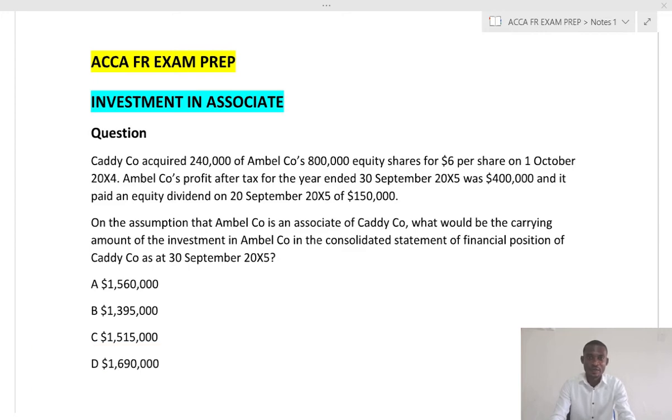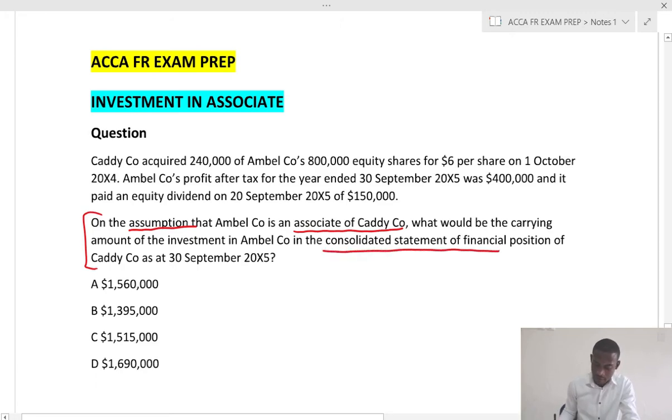Now let's look at the question, starting with the requirement. On the assumption that Amber Co is an associate of Caddy Co, what would be the carrying amount of the investment in Amber in the consolidated statement of financial position of Caddy Co as at 30th September 20X5?